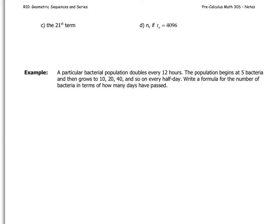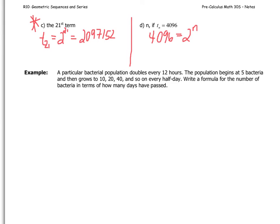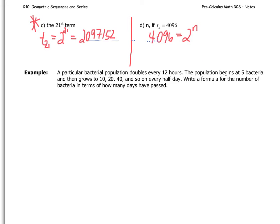There are two more practice questions. For the 21st term, plugging into the formula gives t₂₁ = 2²¹ = 2,097,152. For part D, given that a term value is 4096, we want to find which term number n it is. In grade 11 we use guess and check — if n = 12, then 2¹² = 4096, which is correct. In grade 12 we'll develop a cleaner method using logarithms.